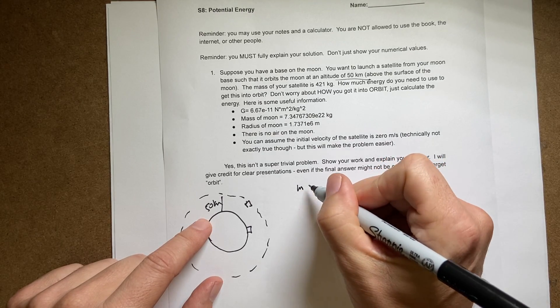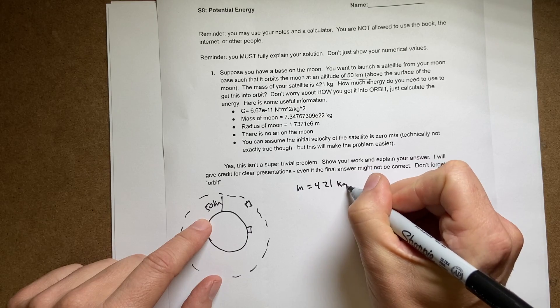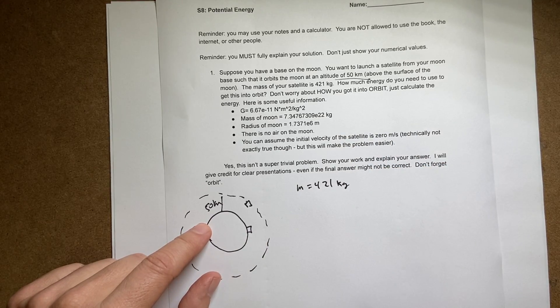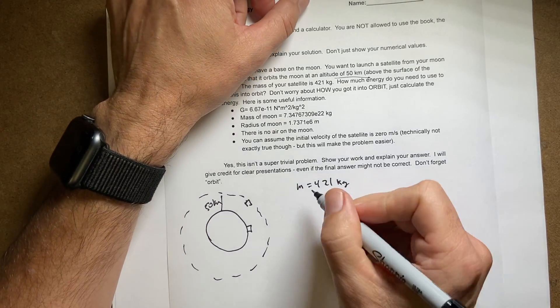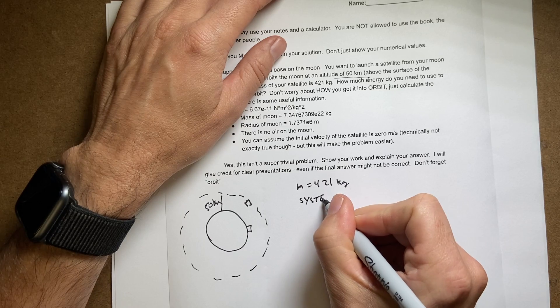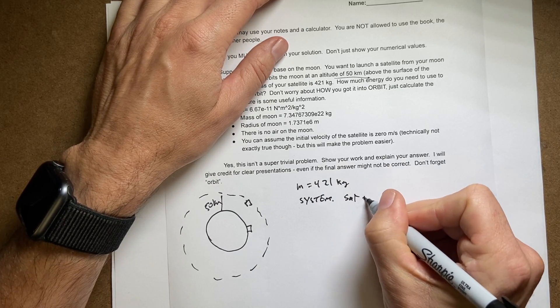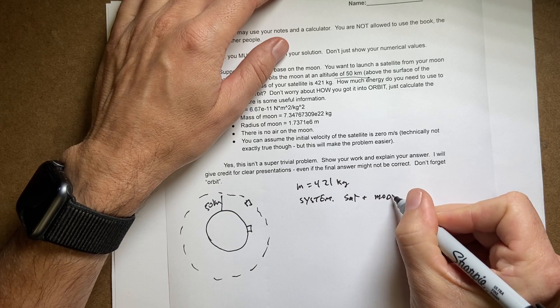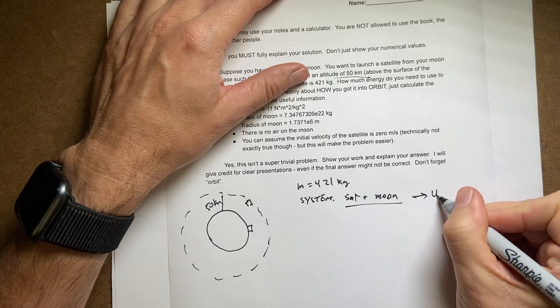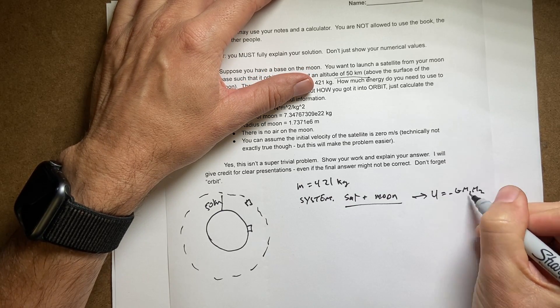The mass of the satellite is 421 kilograms. The question is how much energy do I need to get into orbit? Let's just go ahead and start with our system. The system is going to be the satellite plus the moon. And because I have both of those then I can have gravitational potential energy, negative g m1 m2 over r.